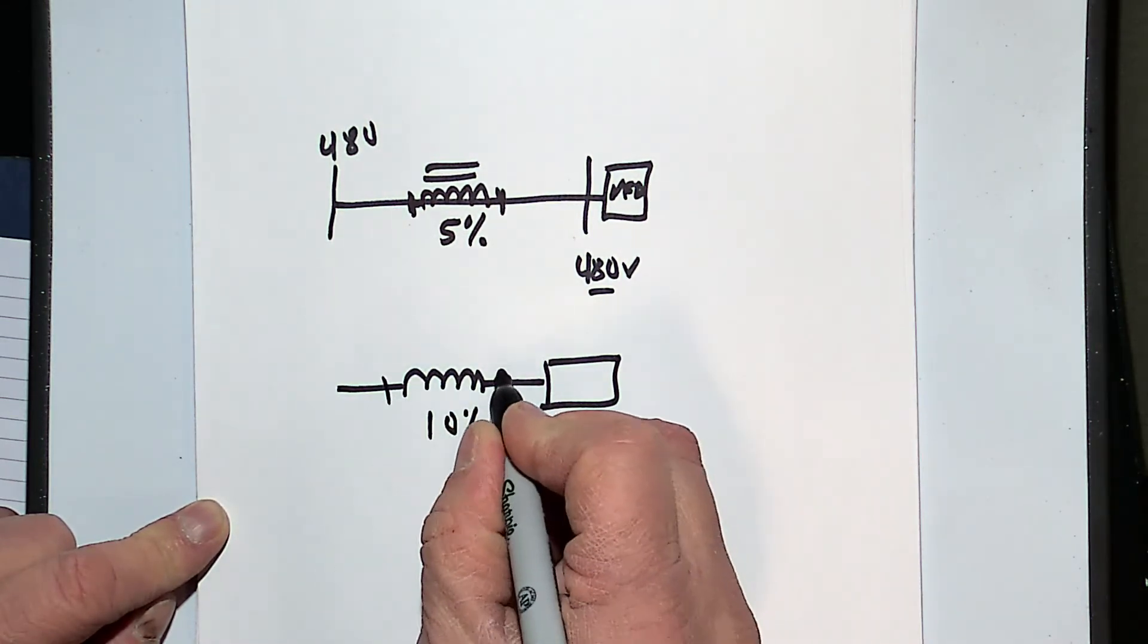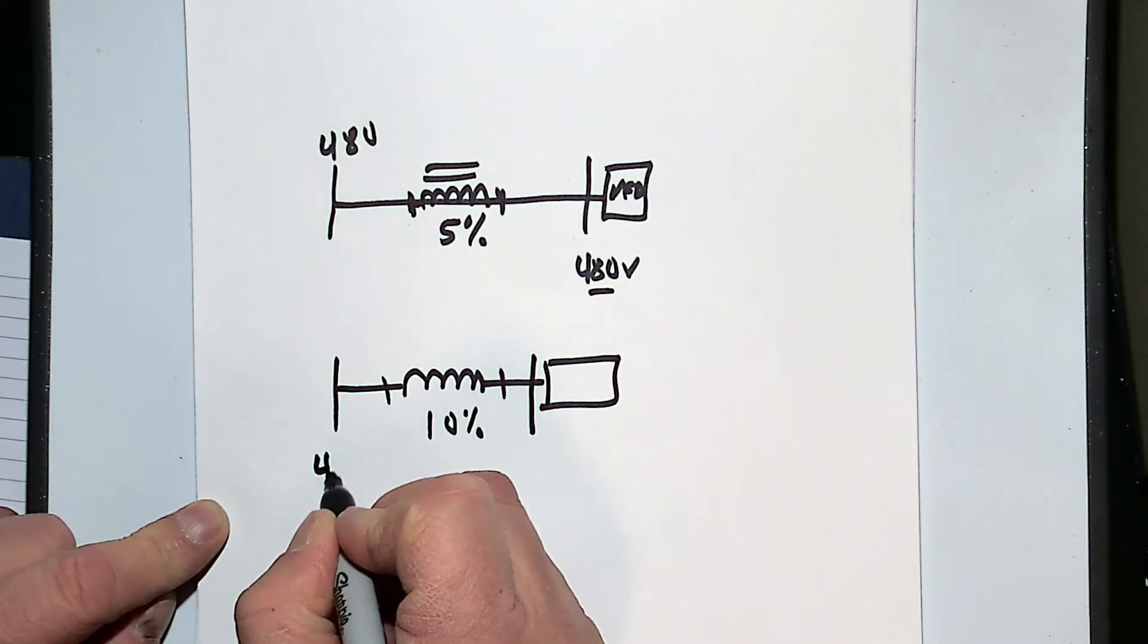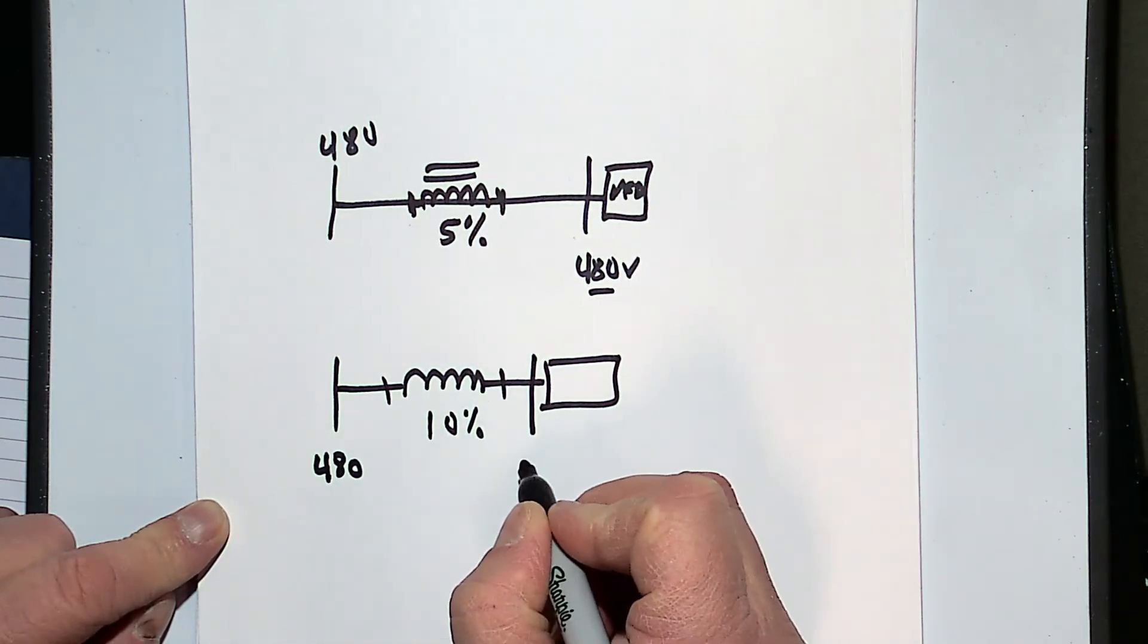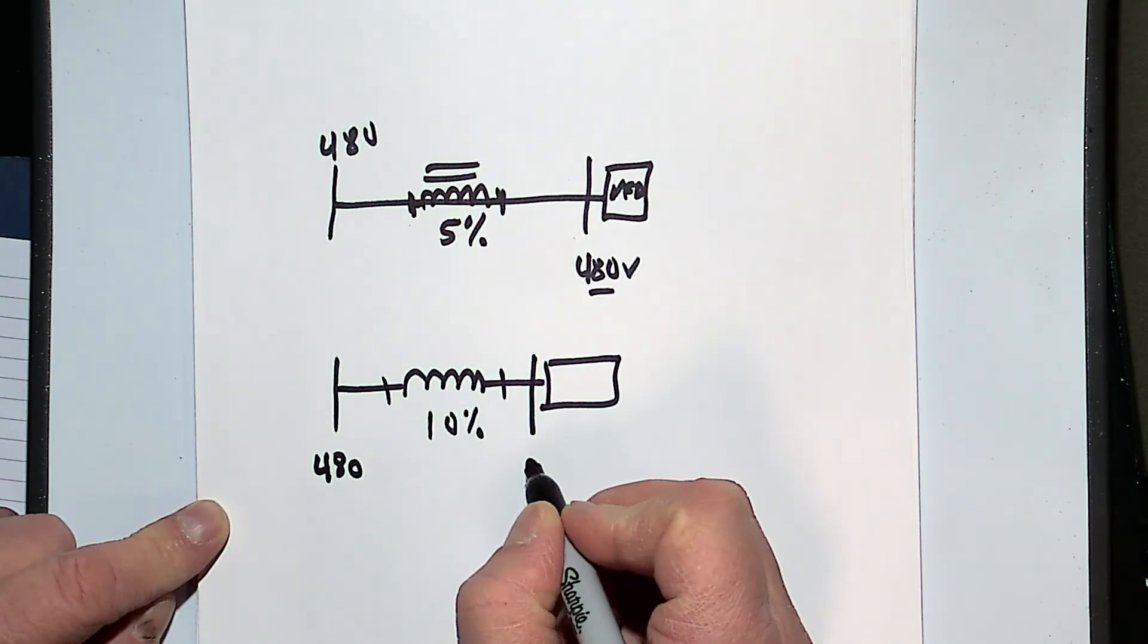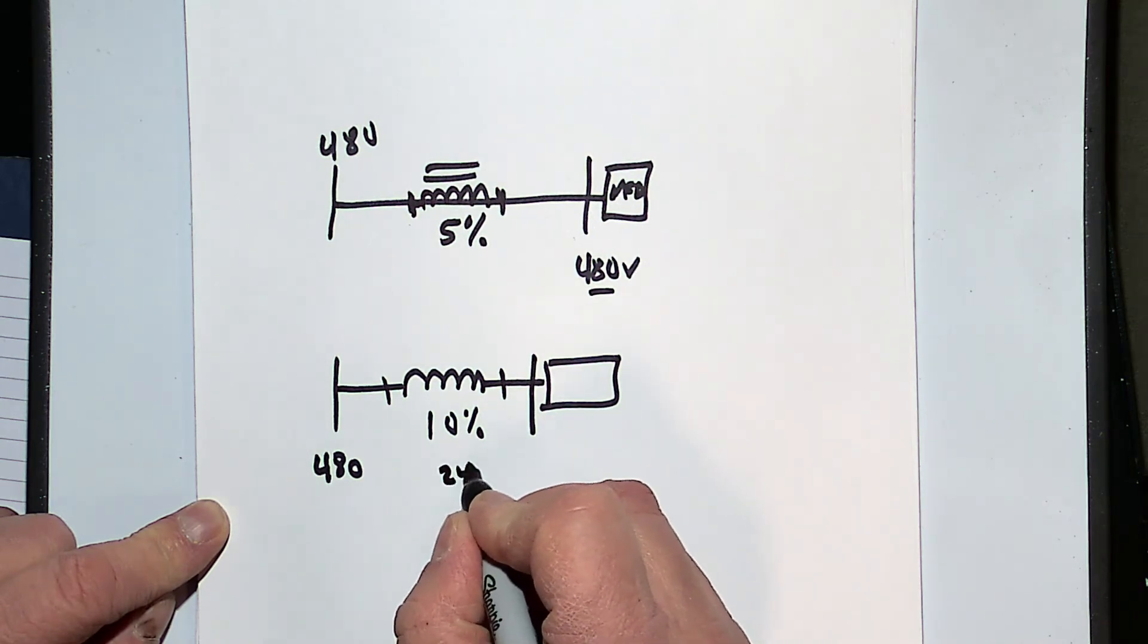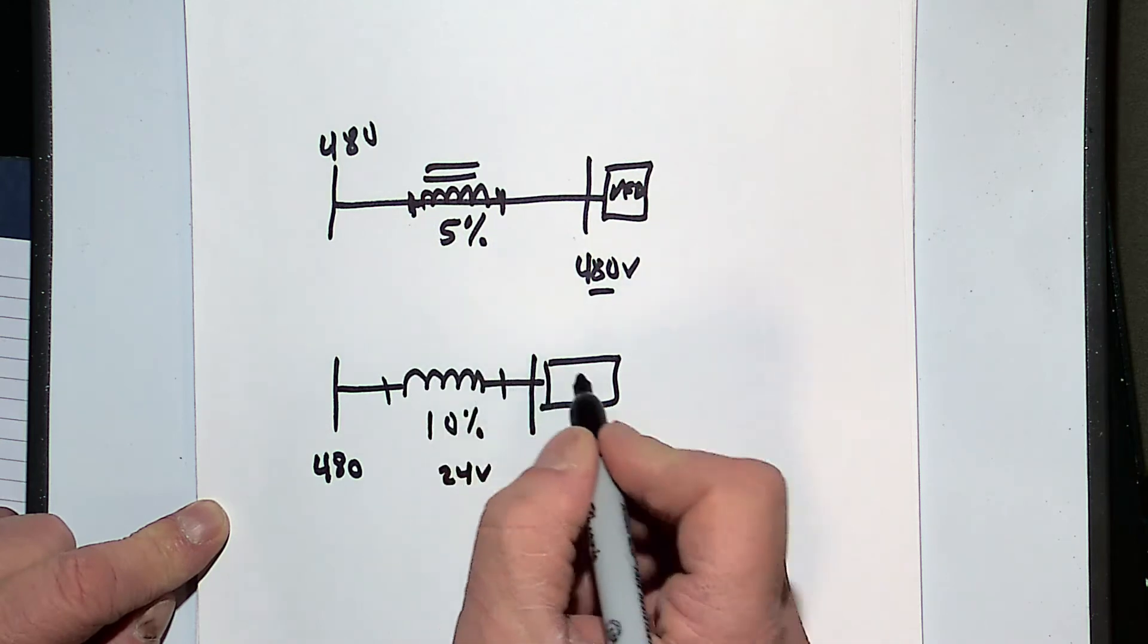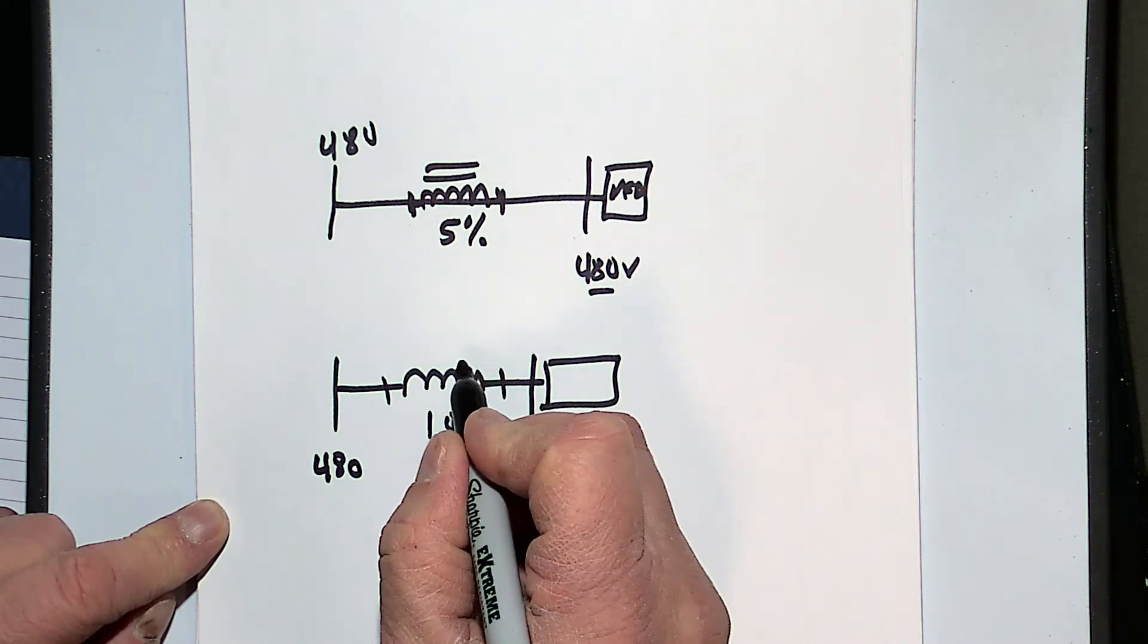But if I measured across, and what I mean by that is the voltage here is 480, the voltage here would be maybe about a 5% drop. So again, about 24 volts across here. So if I measured across that reactor, though, what I actually would get is about a 10% drop, or about 48 volts.